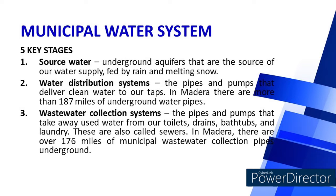We will now discuss the municipal water system and its five key stages. First is the source of water — underground aquifers fed by rain and melting snow. Second is the water distribution system: pipes and pumps that deliver clean water to our taps. Third is the wastewater collection system: pipes and pumps that take away used water from toilets, drains, bathtubs, and laundry.